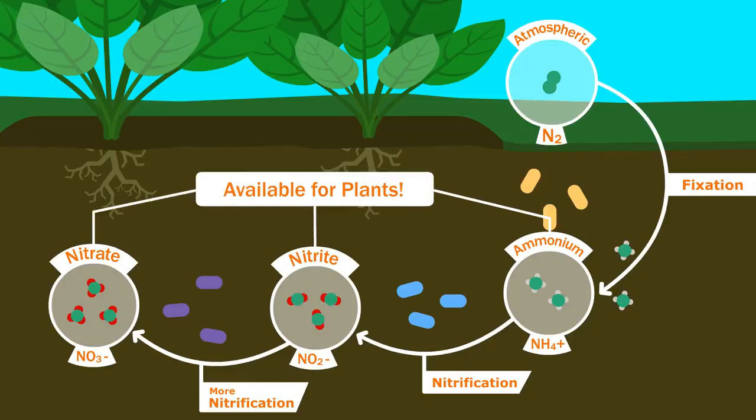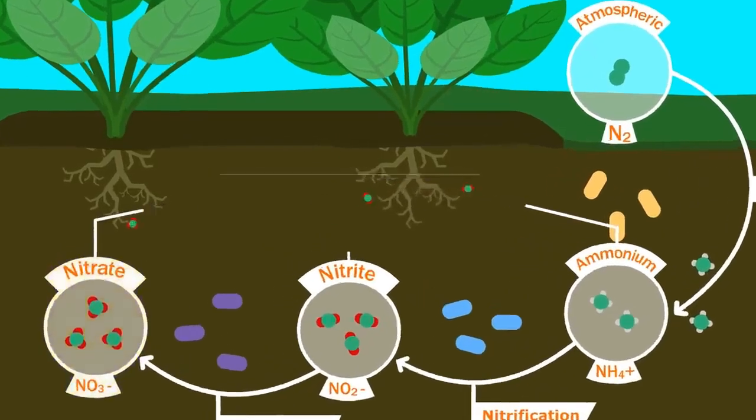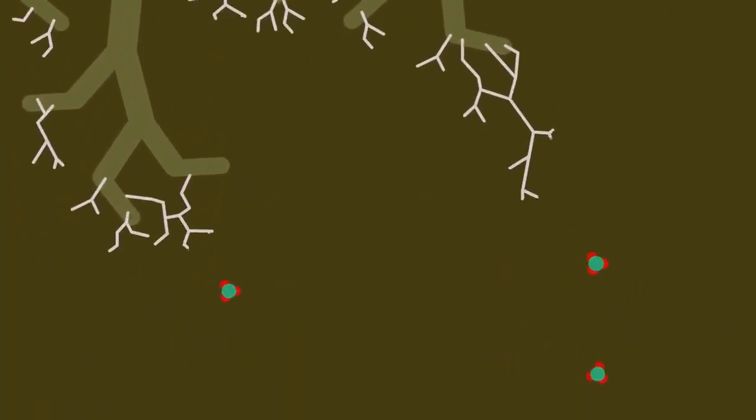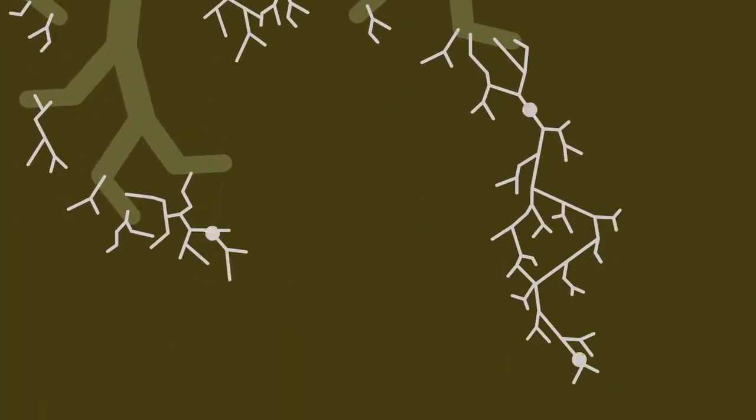All of these forms of nitrogen are available for plants, especially nitrate, which is the easiest for plants to use. Plants can take this up directly if it is near their roots, but they most often rely on strands of fungi that attach to their roots and bring nutrients to them in exchange for the sugars and carbohydrates the plant roots exude.